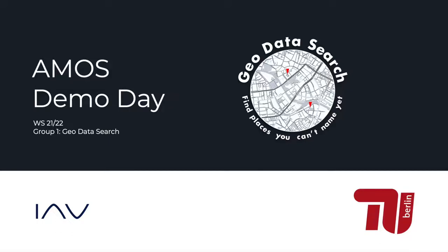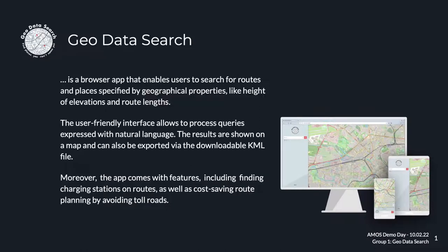Welcome. Today we would like to introduce you to GeoDataSearch, a product developed at TU Berlin with the support of our industry partner IAV. GeoDataSearch allows you to search for elevations and routes with constraints like length or height. The search criteria can be defined in natural language using a textbox in a browser. The results for this request are shown in a result list and on a map. They can even be exported to a KML file, which enables the use of the results in other applications.